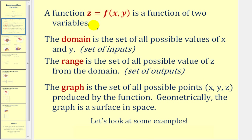Since the function contains three variables x, y, and z, the graph is a set of all possible points called ordered triples x, y, and z that are produced by the function. Geometrically, the graph is a surface in space.